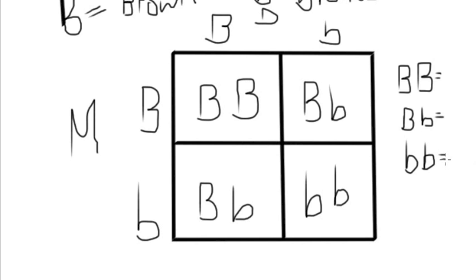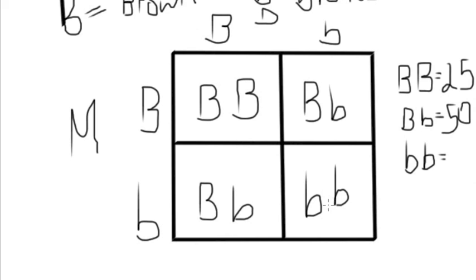A lot of times if you become a genetic counselor, parents might wonder what's the probability their kid is going to have blonde hair. So here's the probability: big B big B appears in only one of the four boxes — that's 25%. Big B little B appears in two boxes — two out of four is 50%. And little B little B again is only one of the four boxes — that's 25%.